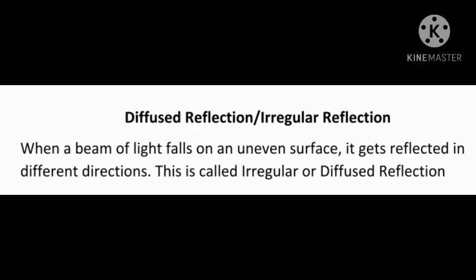We can see objects when light reflected by them falls on our eyes. It is because of irregular reflection that we can see objects from every direction. Irregular reflection of sunlight by objects around us enables our room to have light during the day, even if sunlight does not directly fall into it.